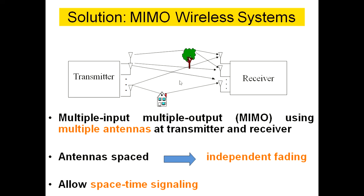Depending upon the nature and the material of the obstacles between the transmitter and receiver, you will have reflection, refraction, and scattering.